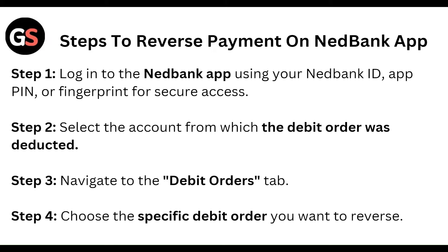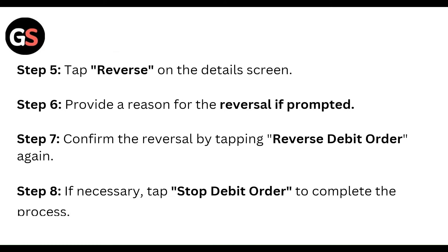Choose the specific debit order you want to reverse and tap to view the reverse details screen. Provide a reason for the reversal if prompted, and confirm the reversal by tapping the reverse order button again. If necessary, tap to stop the debit order to complete the process.